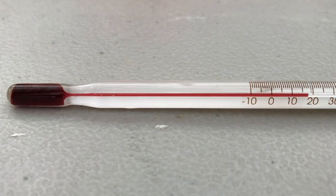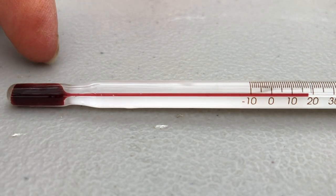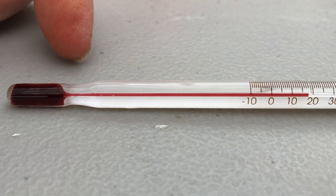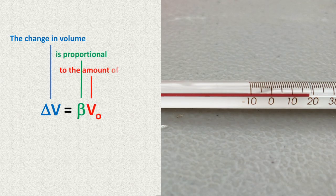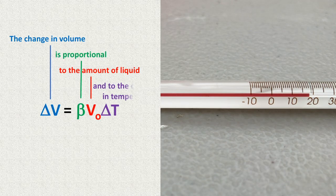There's a reservoir full of alcohol connected to a very thin tube. When the temperature increases, the alcohol expands, forcing the liquid into the tube. The increase in volume is proportional to the amount of liquid and to the change in temperature.